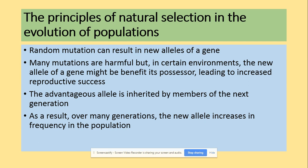The principles of natural selection in the evolution of populations require several things to be in place. There has to be a random mutation which can result in a new allele of a gene. Many mutations are harmful, but in certain environments the new allele might be beneficial, leading to increased chance of reproduction. These advantageous alleles will be inherited by members of the next generation, and over many generations the new allele will increase in frequency in the population.